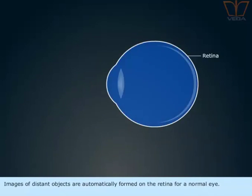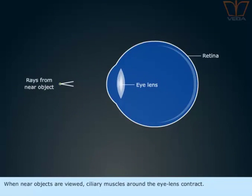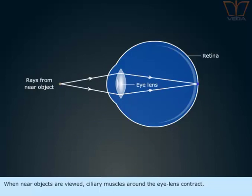Images of distant objects are automatically formed on the retina for a normal eye. When near objects are viewed, ciliary muscles around the eye lens contract. This causes the eye lens to become more convex and the image is formed on the retina.